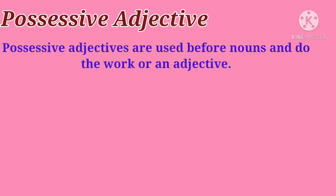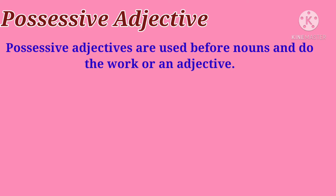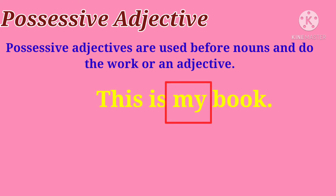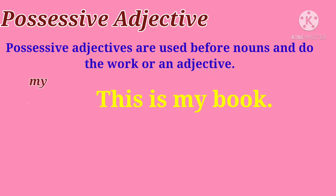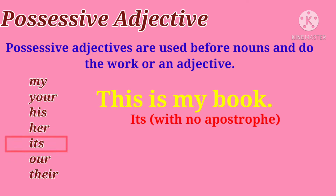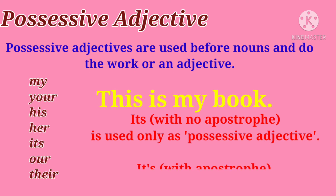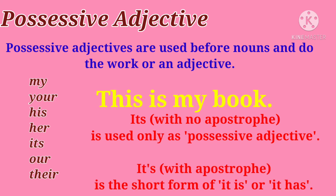Possessive adjectives are used before nouns and do the work of an adjective — adjectives are describing words which describe a noun. For example, 'This is my book' — here 'my' is a possessive adjective because it is used before the noun 'book' and describes it. Possessive adjectives are: my, your, his, her, its, our, and their. Note that 'its' without an apostrophe is used only as a possessive adjective. 'It's' with an apostrophe is the short form of 'it is' or 'it has.'